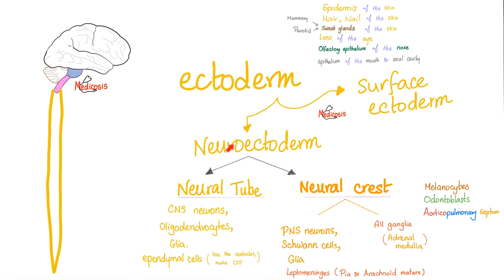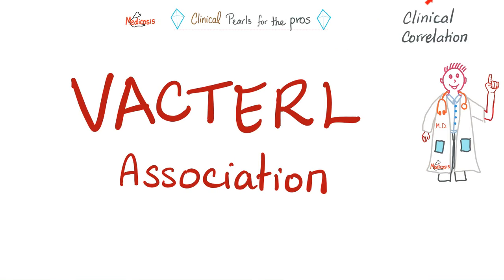Ectoderm: you have surface ectoderm and neuroectoderm. Surface ectoderm gives you: epidermis of the skin; hair and nail of the skin; sweat glands, mammary glands, parotid glands near the skin; lens of the eye; olfactory epithelium of the nose; epithelium of the mouth; epithelium of the anal cavity — your orifices. Imagine a strip mall with a dermatologist next to a hair and nail salon, a gym, a dentist and plastic surgeon, an optometrist, and a proctologist.